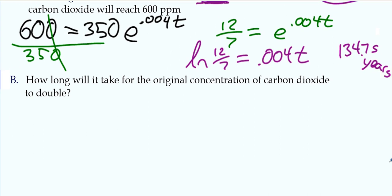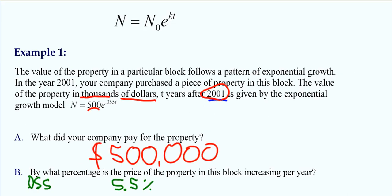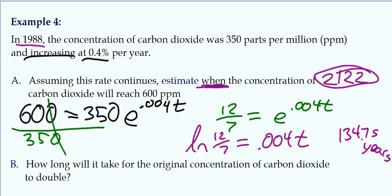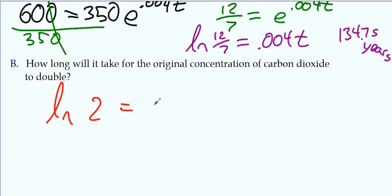And now it's asking how long will it take for the original concentration to double? We could go with the fact that we knew it started with 350 and it's going to 700 to double. Or we could just refer back to our double formula and just do natural log of 2 equals kt. Works out the same way. Natural log of 2 equals kt. We know k is 0.004 times t.